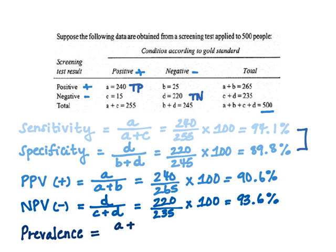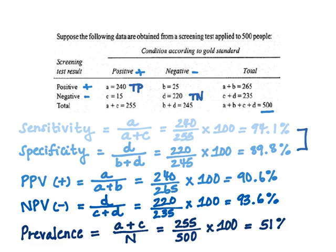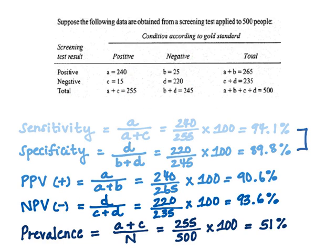Prevalence is our total cases (A plus C) divided by the total population. In this case, 255 divided by 500, multiplied by 100, yields a 51 percent prevalence rate in this population for this specific disease.